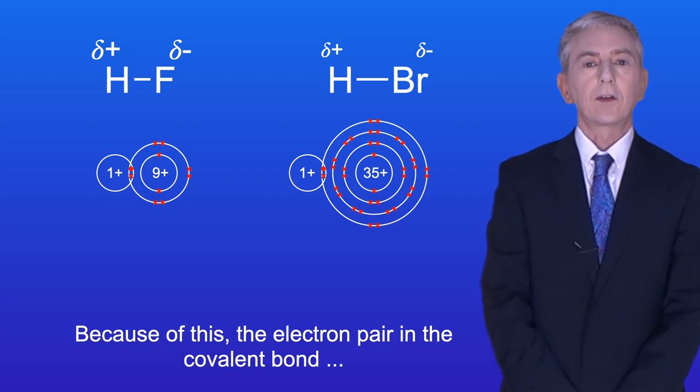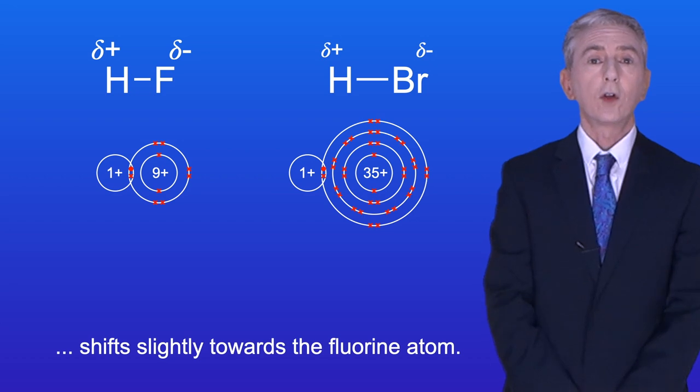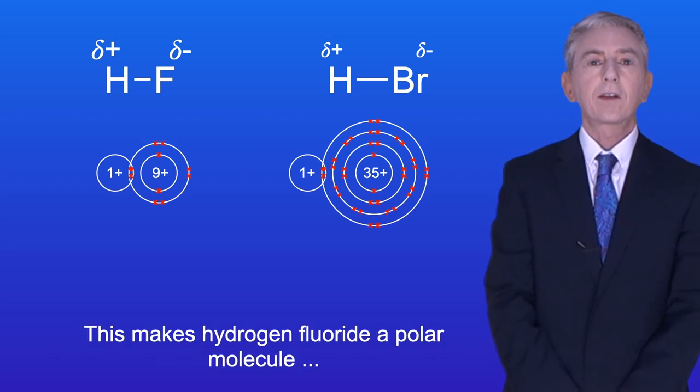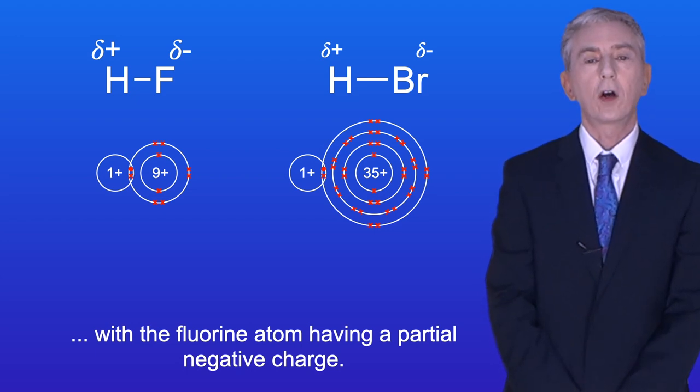And because of this, the electron pair in the covalent bond shifts slightly towards the fluorine atom. This makes hydrogen fluoride a polar molecule, with the fluorine atom having a partial negative charge.